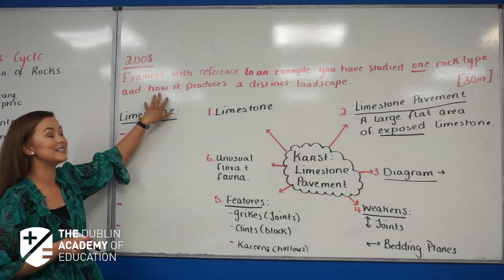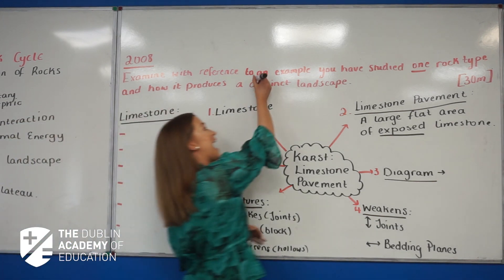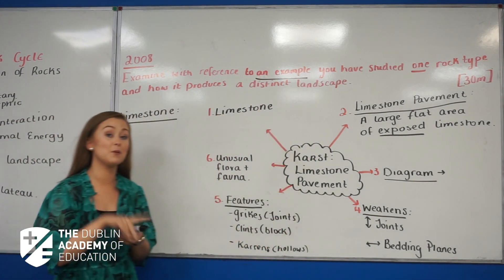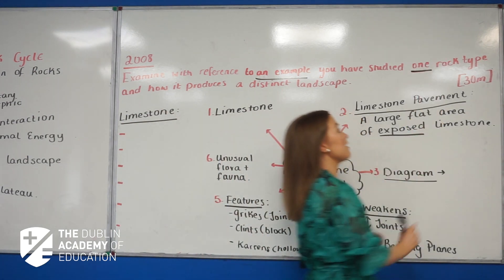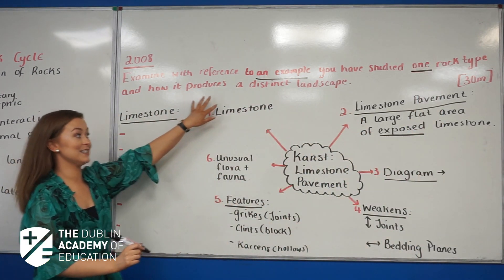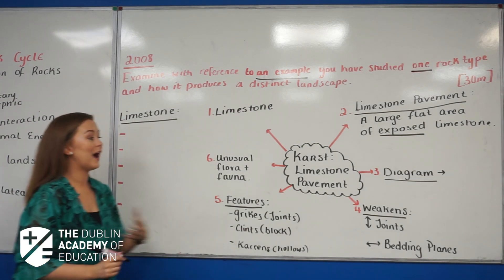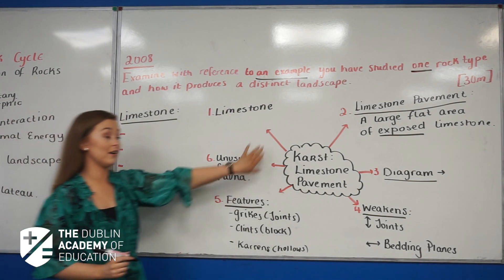It asks us to examine, with reference to an example—remember, an example means one example that you have studied—one rock type and a distinct landscape it produces. So what we're going to look at is limestone and our karst region.